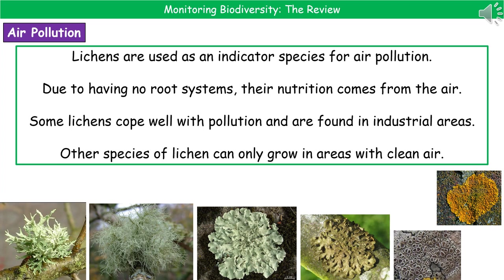When we want to monitor air pollution, a key indicator species is lichens. These are excellent for indicating levels of air pollution. Because they have no root systems, all of their nutrition comes from the air. So depending on which lichens are present, we can identify the levels of air pollution. Some lichens are brilliant at coping with pollution and are found in industrial or polluted areas, while others will only grow in areas with clean air where even small amounts of pollution kill them off.